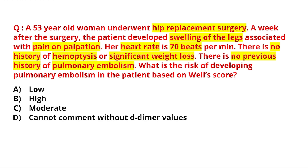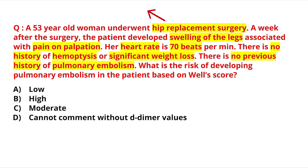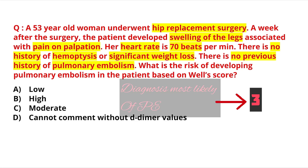The woman underwent hip replacement surgery — that is surgery in the past four weeks, so this fulfills that criteria: score of 1.5. Swelling of legs with pain on palpation — that is signs and symptoms of DVT: score of 3. Heart rate is 70 beats per minute, which is normal — no score. No history of hemoptysis or cancer — no score. No previous history of pulmonary embolism — no score. Additionally, this diagnosis is most likely to be pulmonary embolism: score of 3.